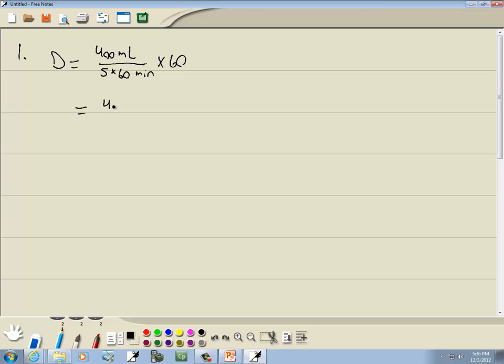Now I'm going to go ahead and drop the milliliters there, so 400 divided by 300 times 60, and it's the drops per minute. We've got 400 divided by 300 times 60, and that gives us 80. So 80 drops per minute.